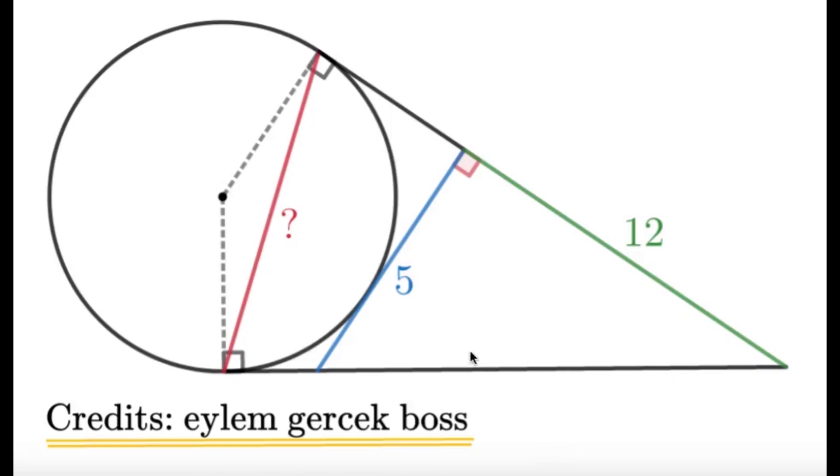Given this figure below, we have a lot of tangents. So we have one tangent here at the bottom, we have one tangent here at the top, and we have another tangent, this blue segment of length 5. Given this figure, find the length of the red segment here.